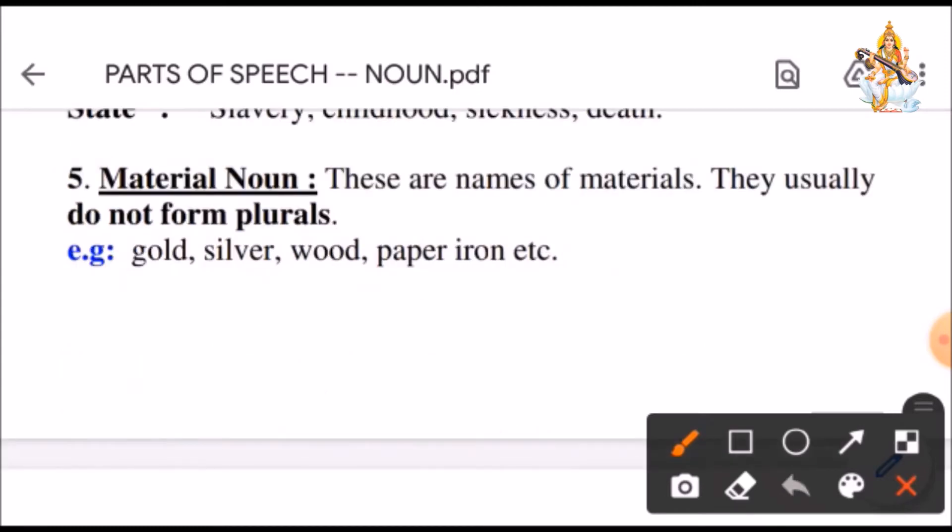Next is material noun. These are the names of materials. They usually do not form plurals. For example, gold, silver, wood, paper, iron, etc.